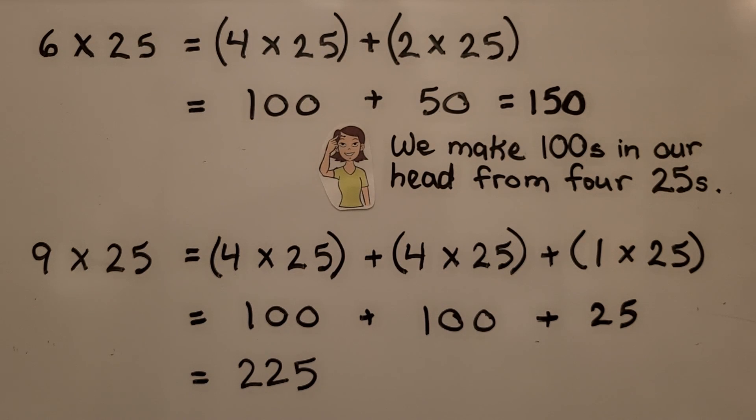We make 100's in our head from four 25's. If we have nine of them, we can think, well, four is 100 and another four is 100. That would be 200. And now we just have one left over. We have 225.